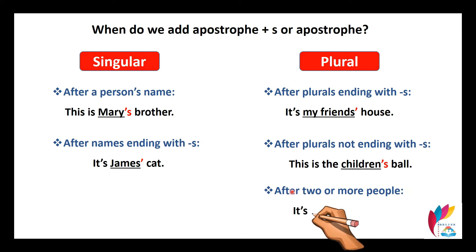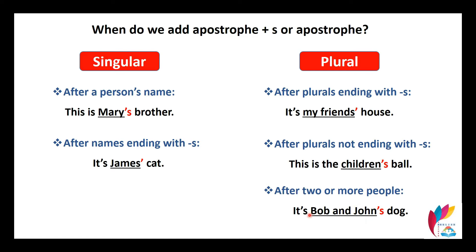After two or more people, for example 'it's Bob and John's dog.' Whose dog is this? It's Bob and John's. We have two names — Bob and John — but we add the apostrophe S only at the end of the last name. We don't say 'it's Bob's and John's dog'; we say 'it's Bob and John's dog.'